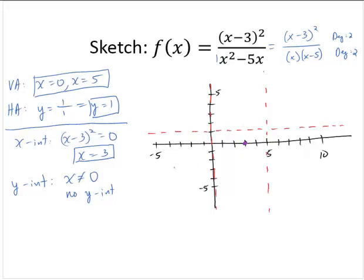So let's see what happens if x is a negative number. So how about, what's f of, I don't know, how about negative 2? f of negative 2 would be negative 2 minus 3 squared over negative 2 squared minus 5 times negative 2. So that would be negative 5 squared, that's 25. And that would give us 4 plus 10, 25 over 14.